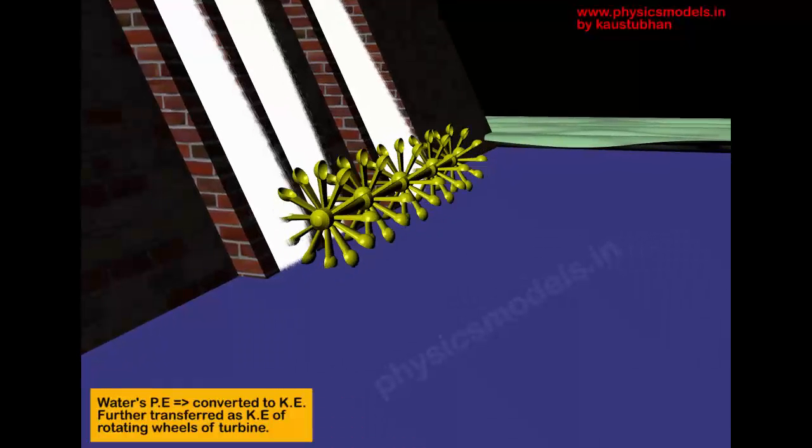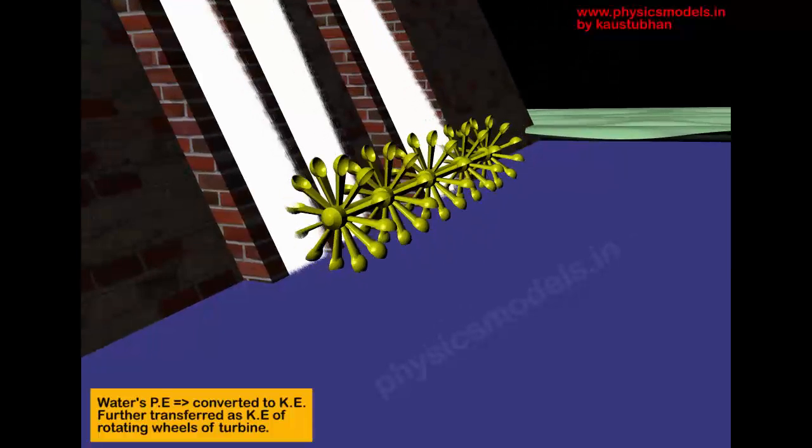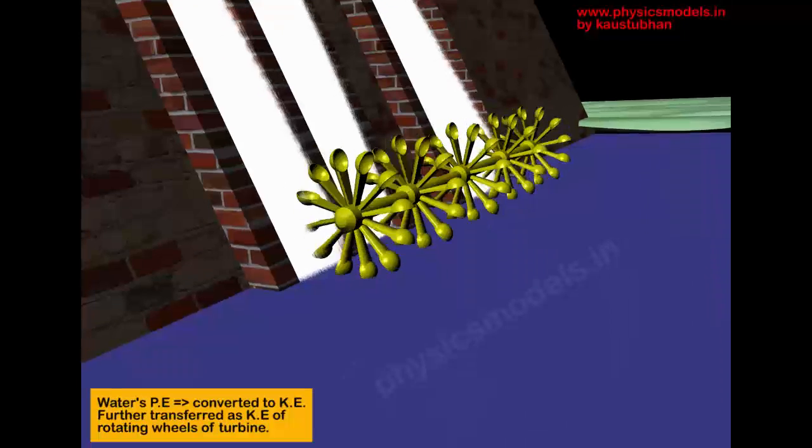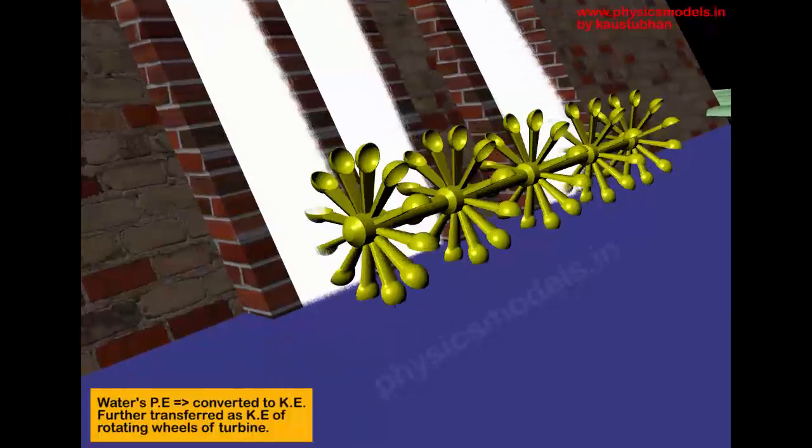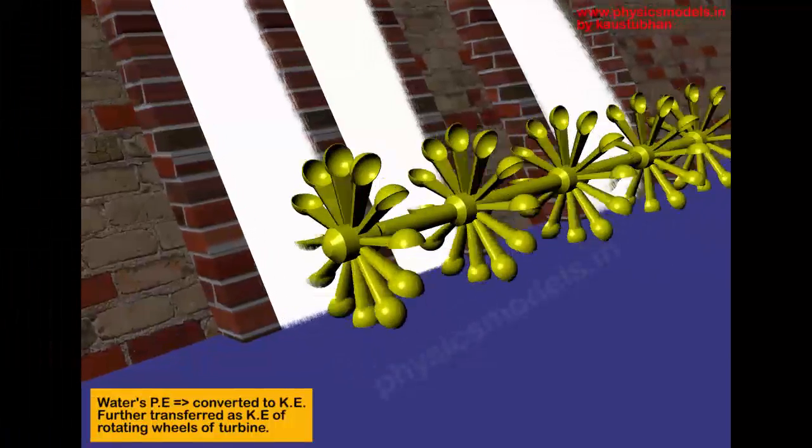To make good use of that kinetic energy, turbine wheels are placed at the bottom. You can see that the water is falling on those cups of those wheels and transferring a good amount of that kinetic energy to those wheels.